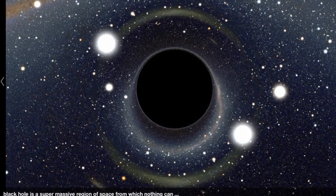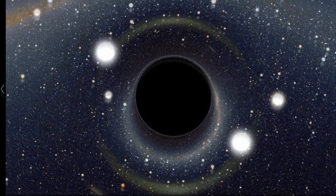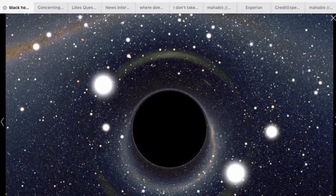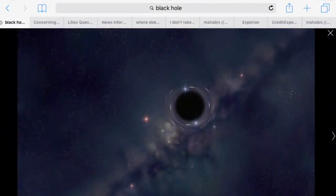Black holes are extremely dense. To make Earth a black hole, you have to squish it down, whilst keeping the same gravity and mass, down to the size of a golf ball. That's incredibly dense.